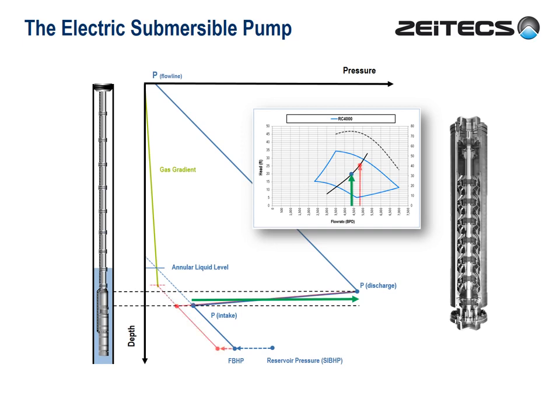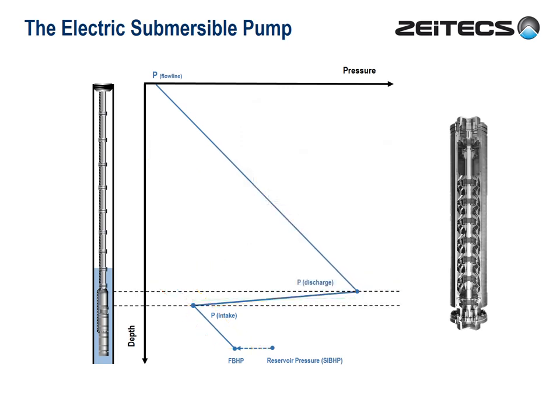But with variable speed, we have a level of flexibility. We can speed up the pump and increase the drawdown and flow rate. Conversely, we can slow down the pump and reduce the drawdown and flow rate. I should admit again that I've been oversimplifying things just a bit. In reality, with friction, compressibility and gas breakout, the gradients we see are actually curved. But I think you get the message.